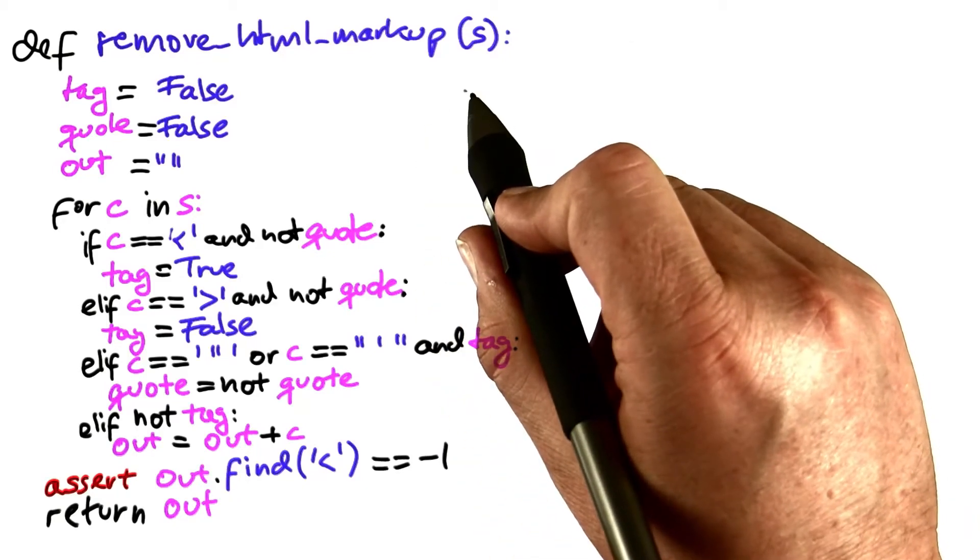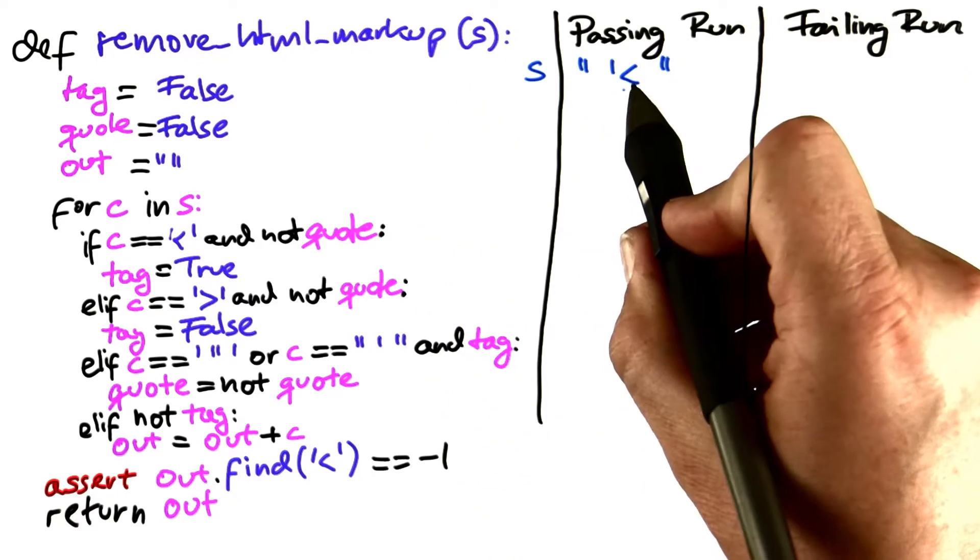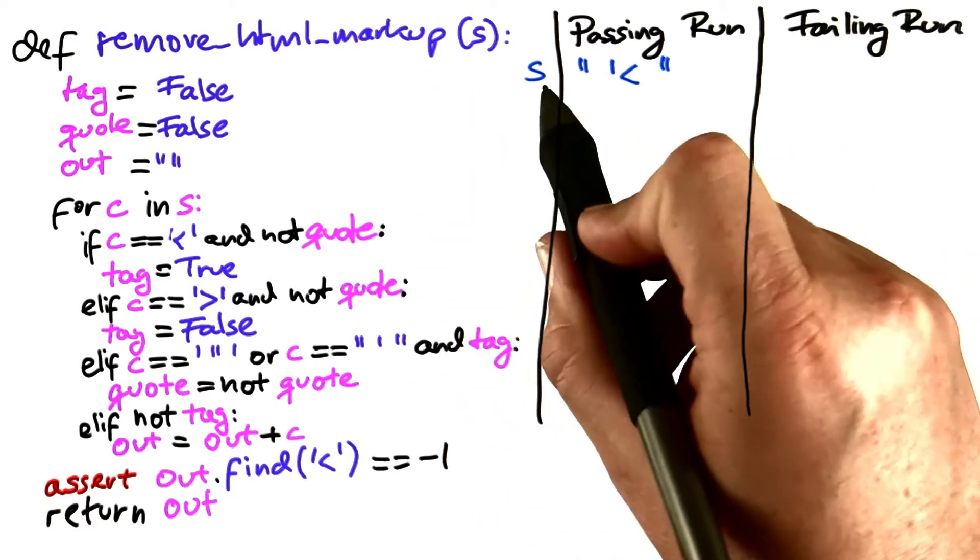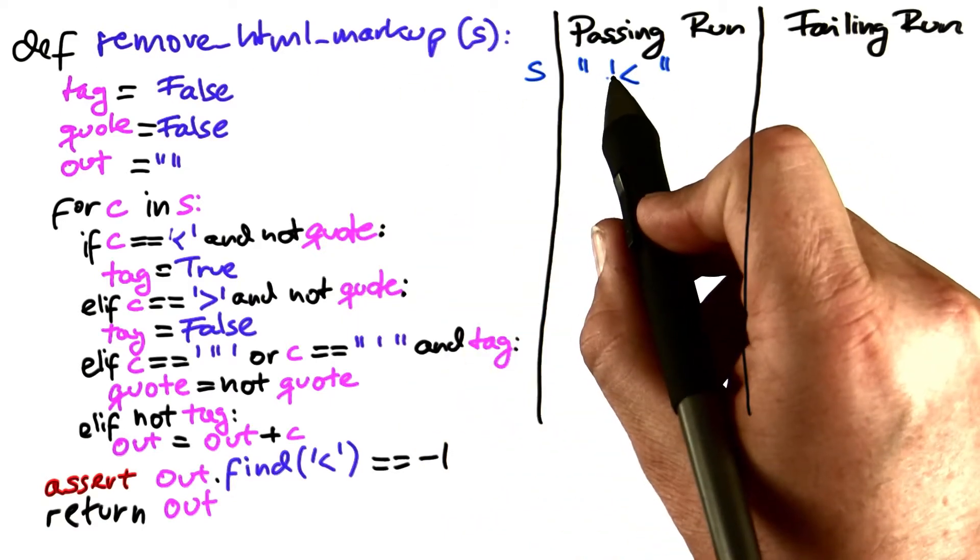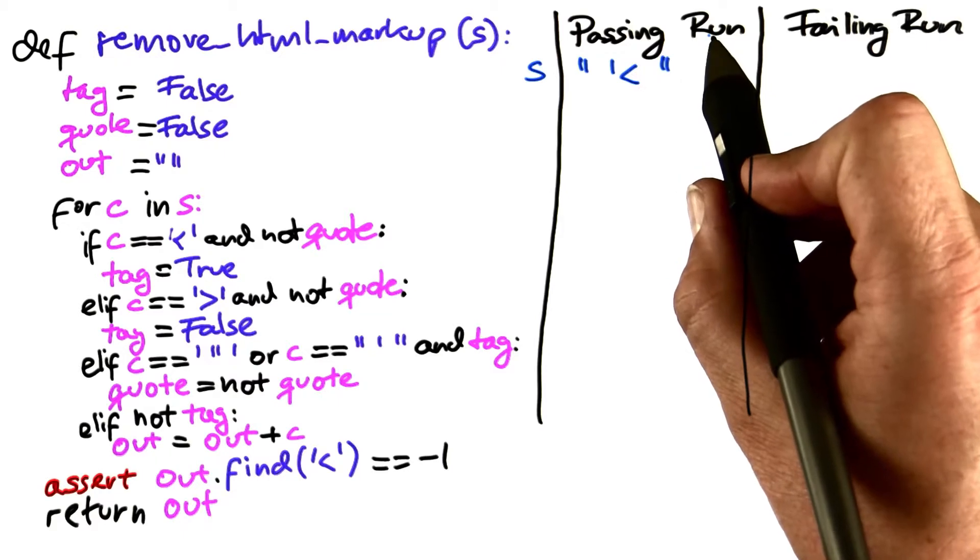Here again is our remove HTML markup program. If we invoke HTML markup with s being a single quote followed by a less than sign, it passes.